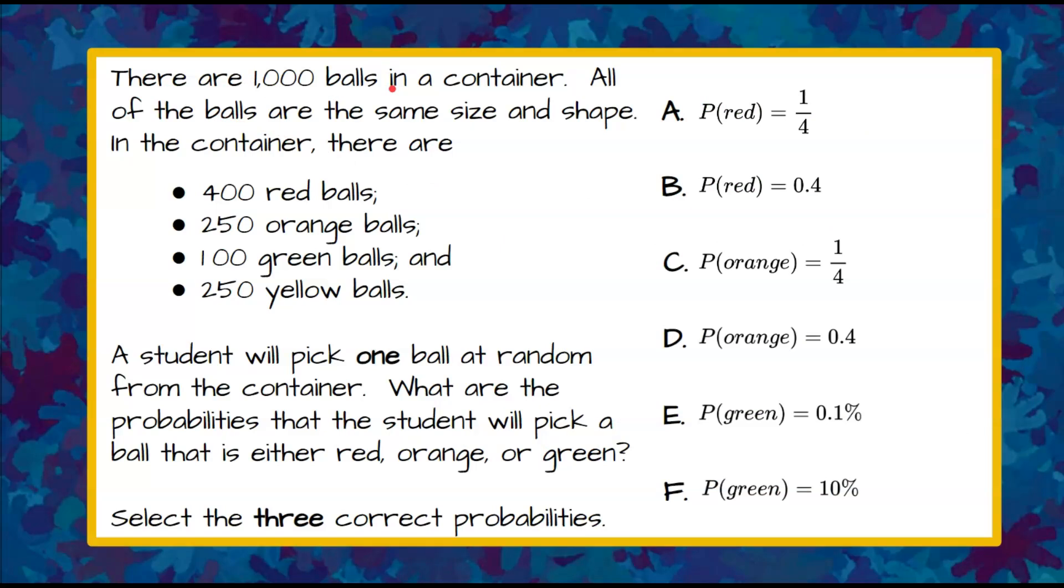There are 1,000 balls in a container. All of the balls are the same size and shape. In the container there are 400 red balls, 250 orange balls, 100 green balls, and 250 yellow balls.